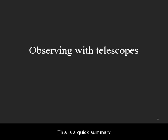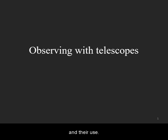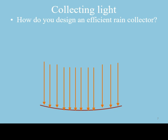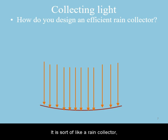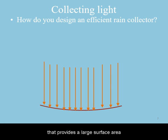This is a quick summary of types of telescopes and their use. Telescopes are used to collect and focus light. It is sort of like a rain collector that provides a large surface area to collect rainwater.